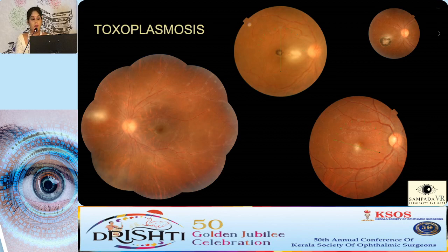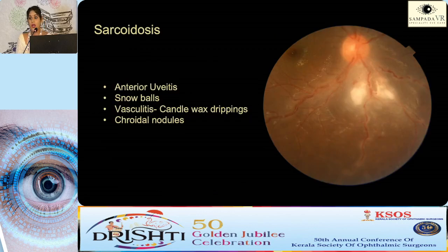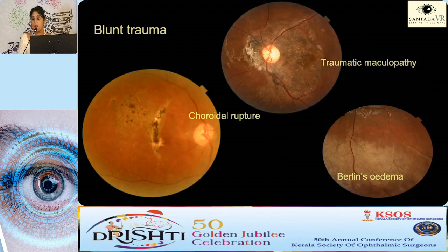Juxtafoveal telangiectasia (MacTel) is most often missed in daily practice. When vision is not proportional to what you see, look under high magnification for blunted right-angle venules or superficial retinal crystals. Toxoplasmosis: fresh cases present with vasculitis or adjacent to a scar. For macular toxoplasmosis, intravitreal clindamycin works better than oral antitoxoplasmic agents. It can be associated with secondary CNVM later. Sarcoidosis can present with anterior uveitis, snowballs, vasculitis, and choroidal nodules. Blunt trauma patients must be followed up — document traumatic maculopathy and choroidal rupture for medico-legal purposes.